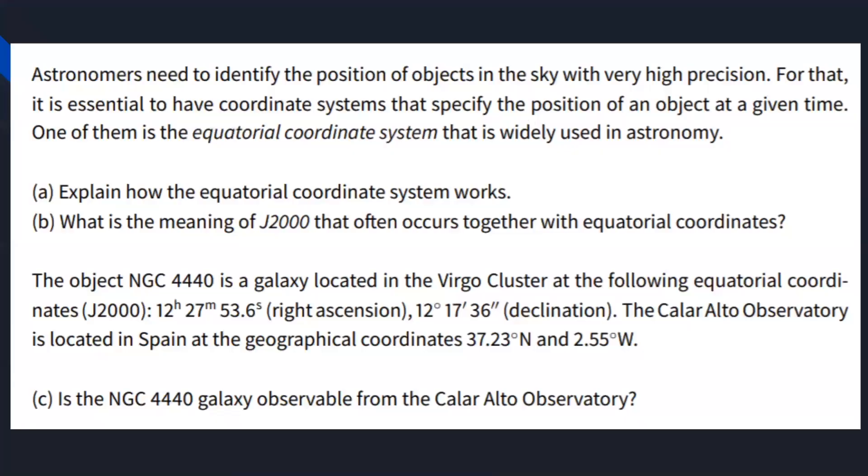The first question is, astronomers need to identify the position of objects in the sky with very high precision. For that, it is essential to have a coordinate system that specifies the position of an object at a given time. One of them is the equatorial coordinate system that is widely used in astronomy. So basically, they are asking about the equatorial coordinate system.